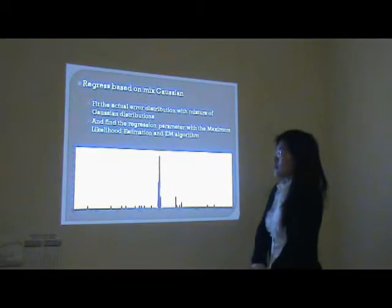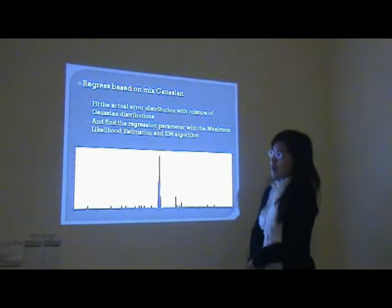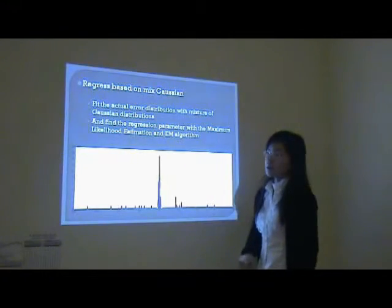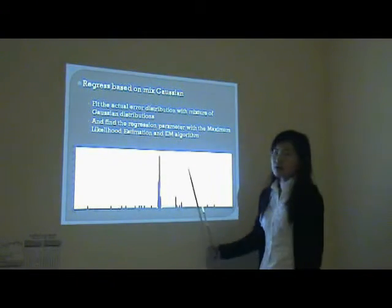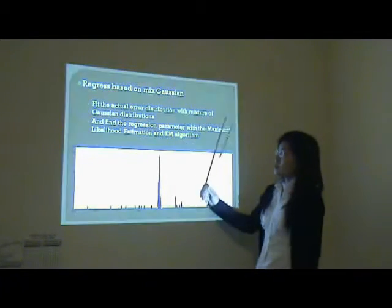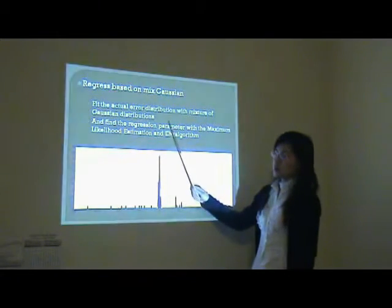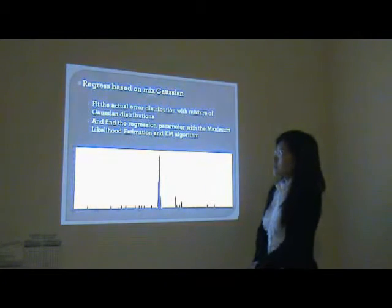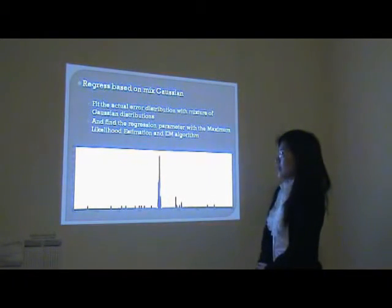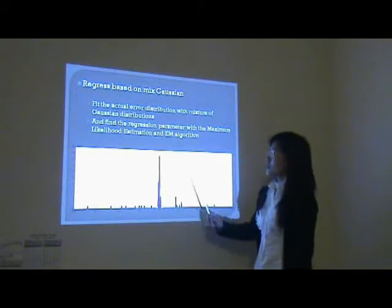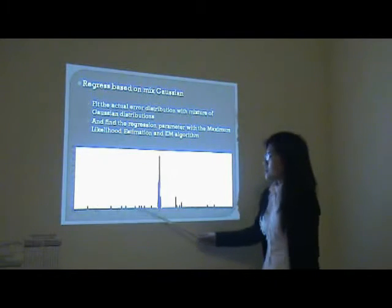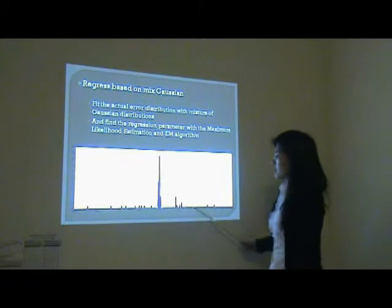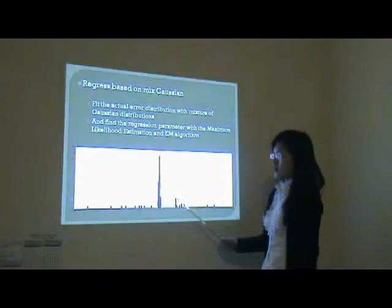But in fact, when noises are large, the Gaussian error assumption doesn't hold. So I fit the actual error distribution with a mixture of Gaussian distributions, and constrain the mixed Gaussian distributions with the same mean values. Then I find the regression parameters with maximum likelihood estimation and the EM algorithm. Here is the result of the regression. You can see that the mixture of Gaussians can fit the error distribution very well.